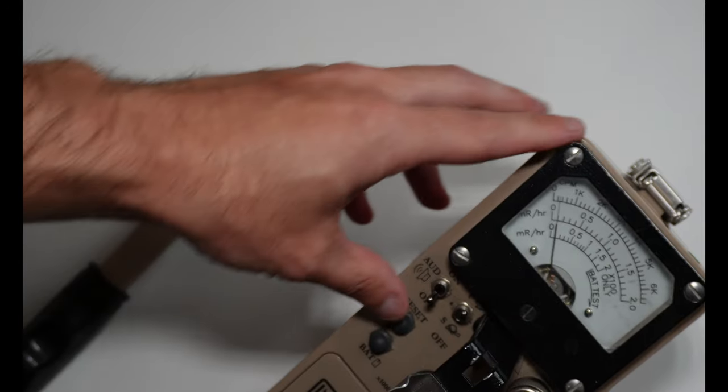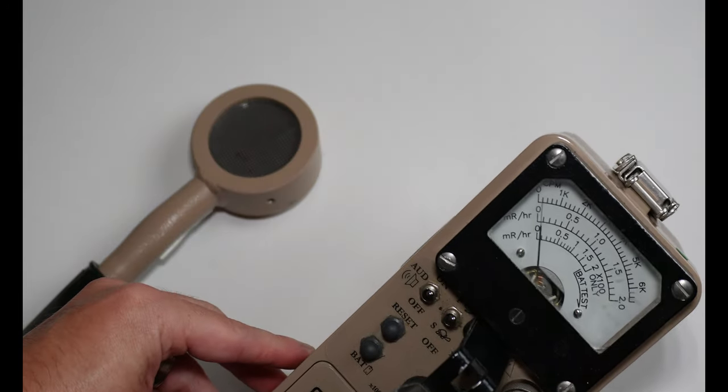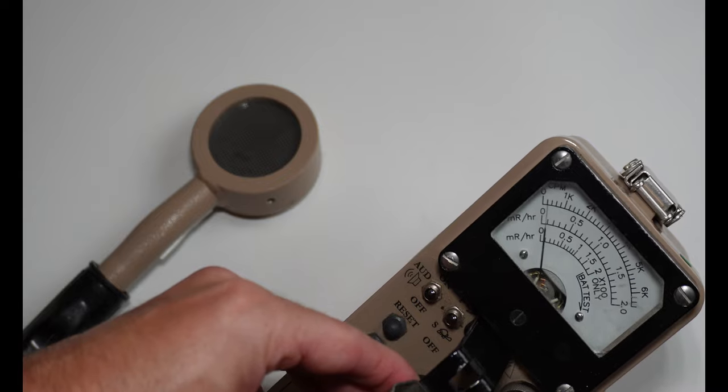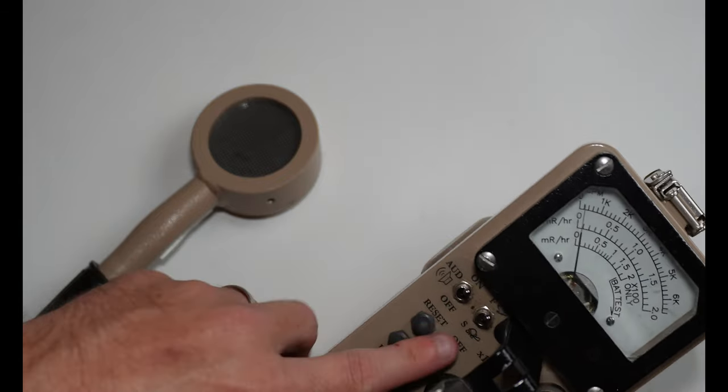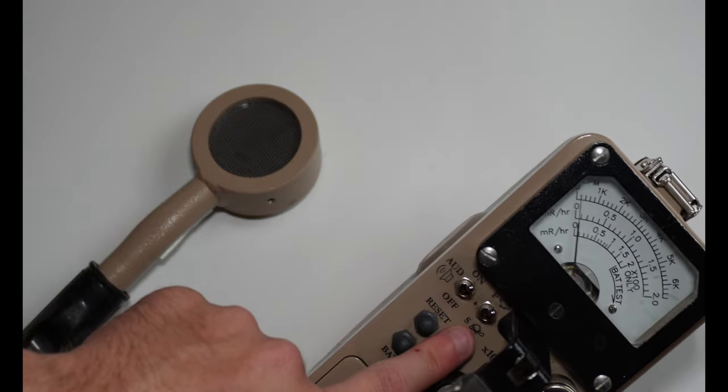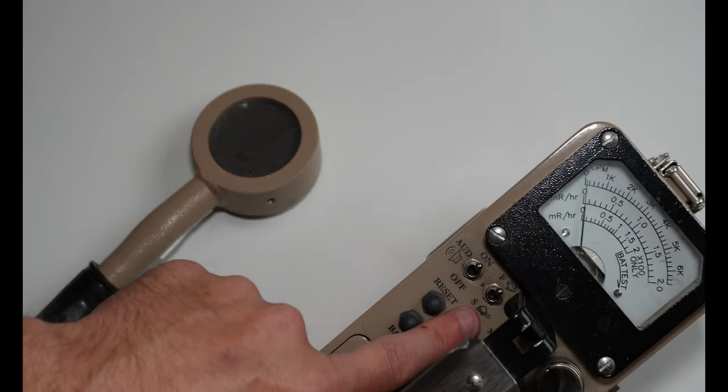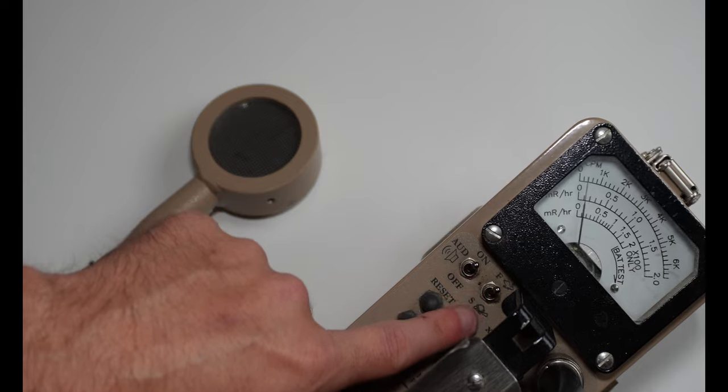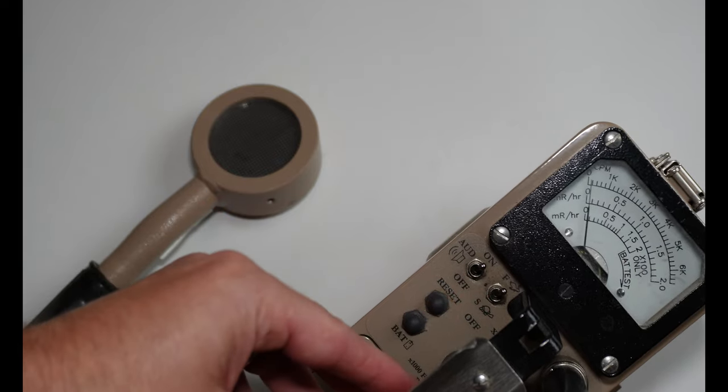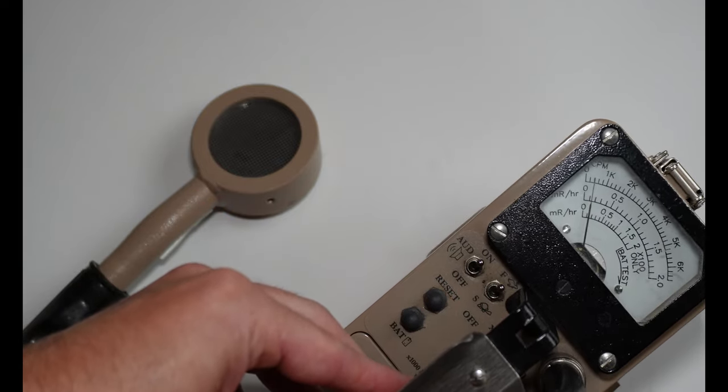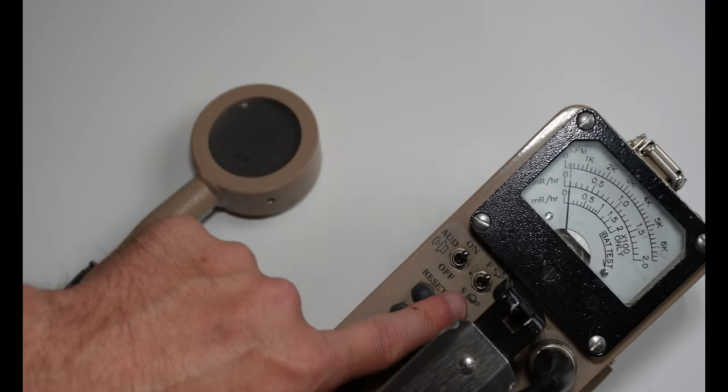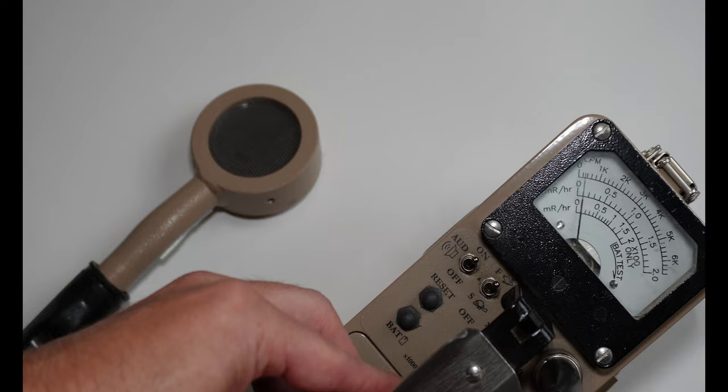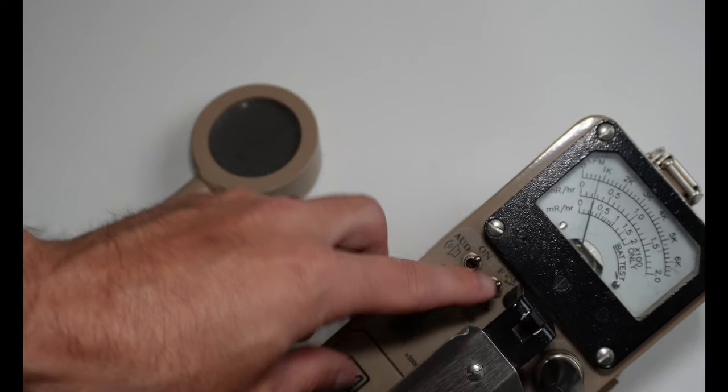We can also flip the audio on, so that we can hear the audible clicks of a radiation. You also have a F and S setting, or a fast and slow setting. Currently we're set on fast. That's a very good setting for looking for removable contamination, or any kind of contamination. The slow setting is going to be good for making a direct measurement of the check source.